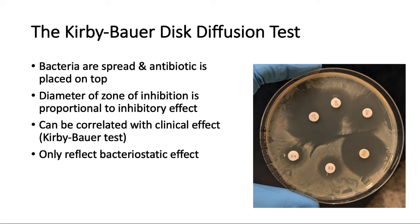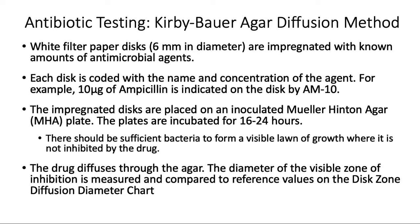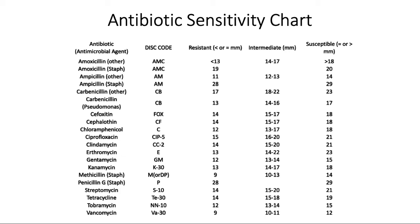The diameter of the zone of inhibition is proportional — the larger the diameter, the bigger the inhibitory effect. In order to correlate it to a clinical effect, we need one more step. The agar used for Kirby-Bauer is a special medium called Mueller-Hinton agar. You put the discs on the plate, incubate overnight or 24 hours, and then measure the diameter of the inhibition zones. Then you have to look at an antibiotic sensitivity chart.